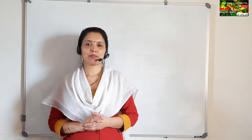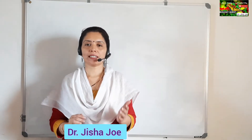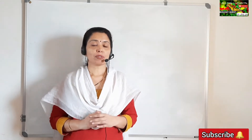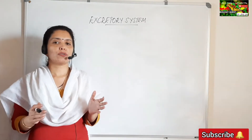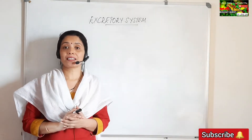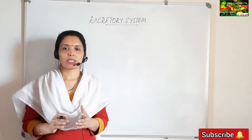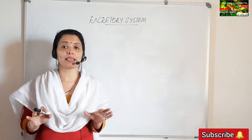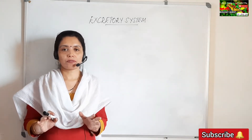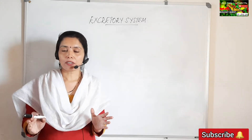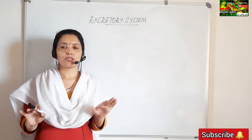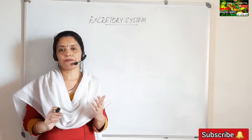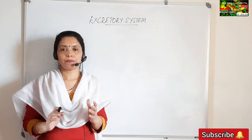Hello dear children, welcome back. I'm Dr. Jisha Jo. In this session we shall discuss the excretory system in humans and the internal structure of the kidneys, which are the primary excretory organs. The kidneys are bean-shaped structures located on either side of the backbone and are protected by the last two ribs. The right kidney is slightly lower than the left kidney to accommodate the liver.